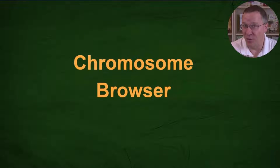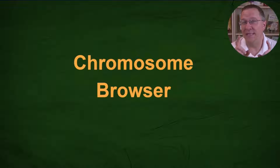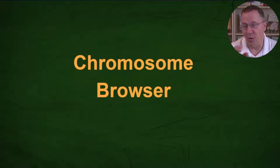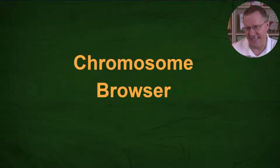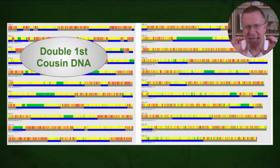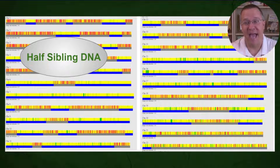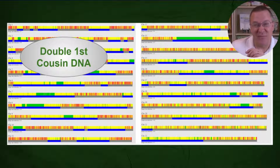So there needs to be another way to distinguish between double first cousins and half siblings. That's actually where a chromosome browser comes in very handy, because with the chromosome browser we can see more than just how much DNA is shared between two people — we can see how that DNA is distributed and what type of sharing it is. Here we have double first cousin DNA, and here we have half sibling DNA.